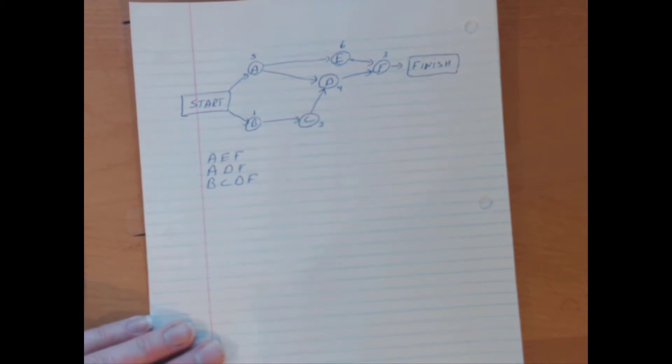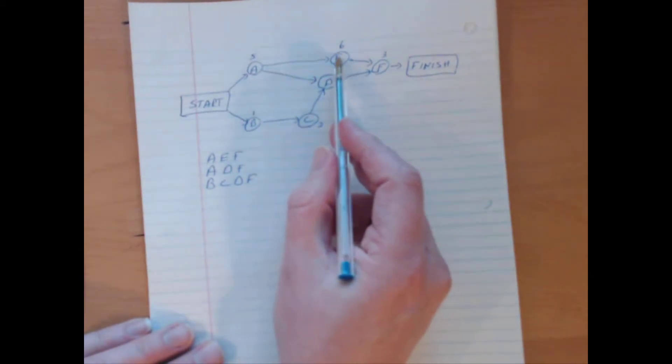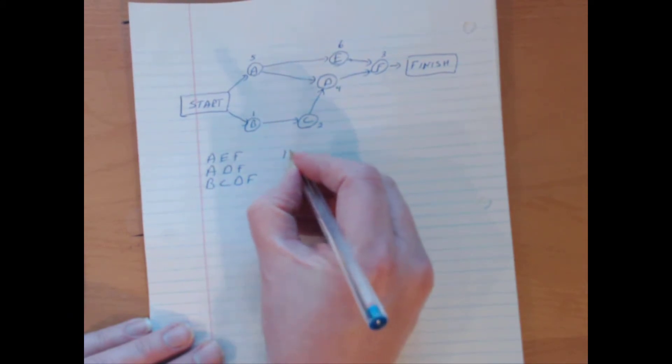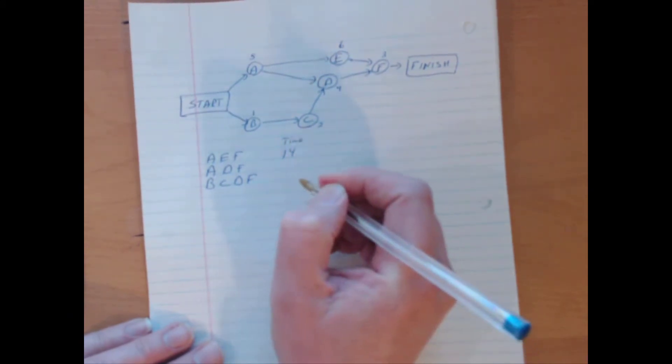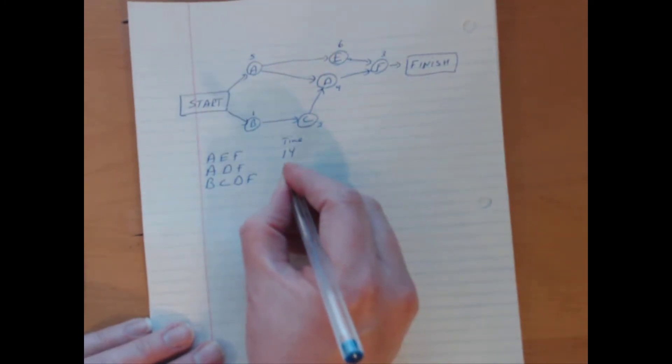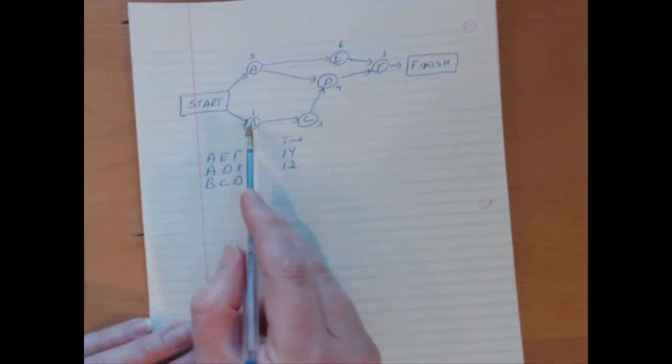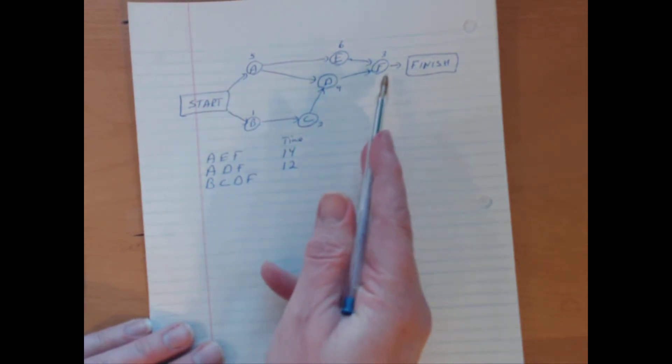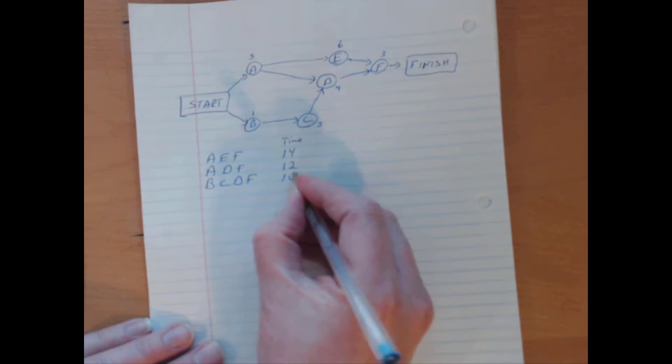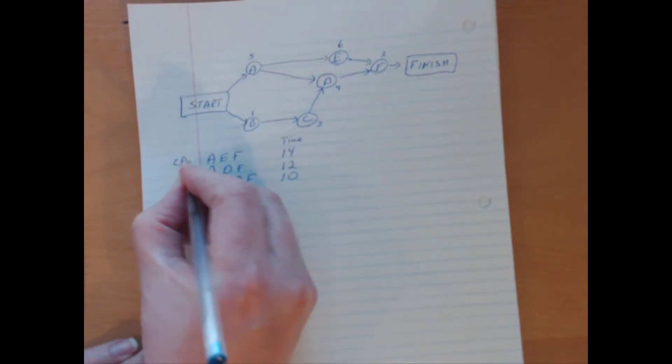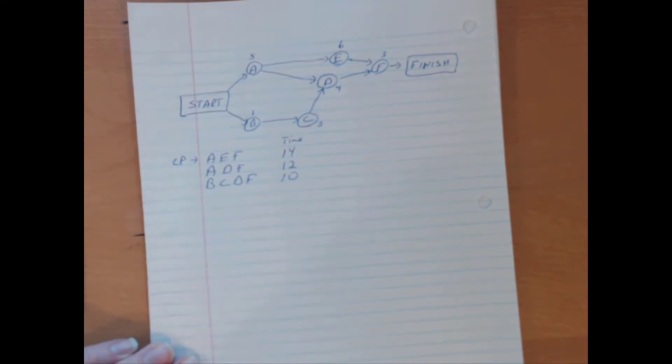And now I can count up how long A, E, F it takes. So for instance, 5 plus 6 is 11 plus 3 is 14. So I can think of time. And time in this case is in months, by the way. A, D, F. A, 5 plus 4 plus 3. And I get 12. And B, C, D, F. 1 plus 2 plus 4 plus 3. And I get 10. So clearly we can kind of see that the critical path is A, E, F. It's the path duration that's the longest. And it sets how long the entire project will take. And in this case, the estimated duration of this entire project is 14 months.